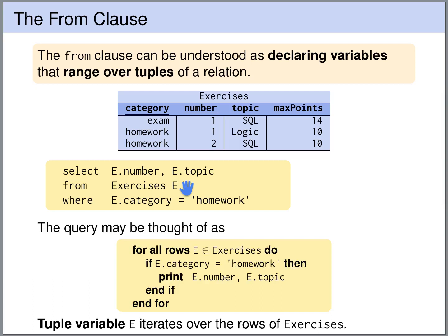So you can understand this query also as follows. You can think of it in the following way. We have a FOR loop where we have a variable E that iterates through the rows of the exercises. And for each row E we check the condition given in the WHERE clause. So we check whether the category of E is equal to HOMEWORK. And if so, then we print the attributes that are selected in the SELECT clause.